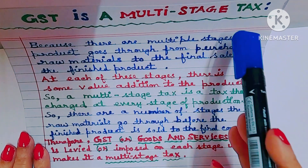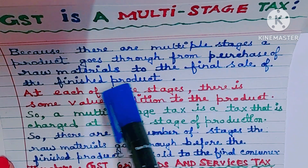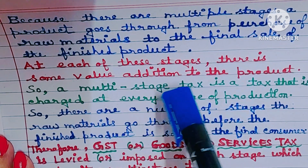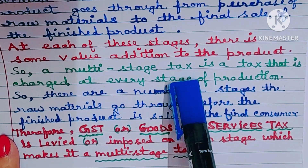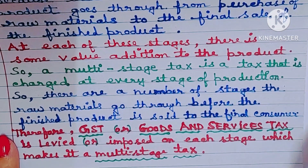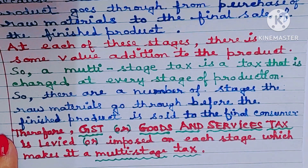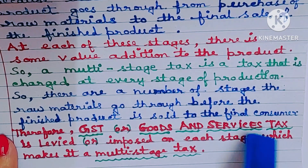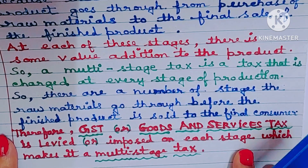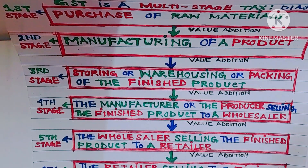GST is a multi-stage tax because there are multiple stages a product goes through from purchase of raw materials to the final sale of the finished product. At each of these stages, there is some value addition to the product. A multi-stage tax is a tax that is charged at every stage of production. There are a number of stages the raw materials go through before the finished product is sold to the final consumer. Therefore, GST is levied on each stage, which makes it a multi-stage tax.